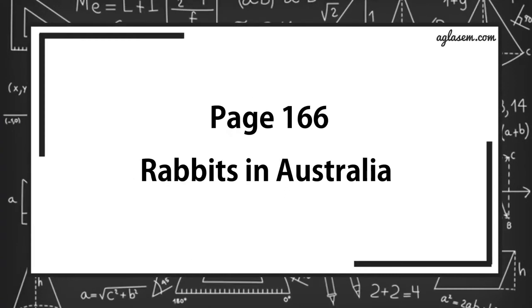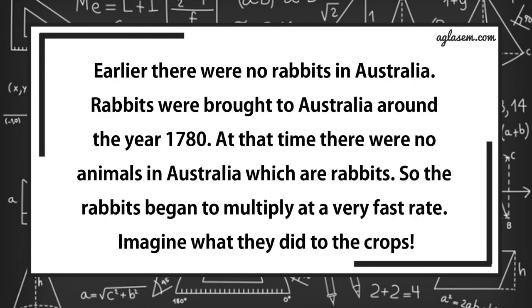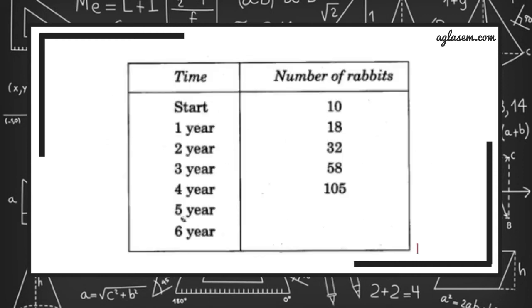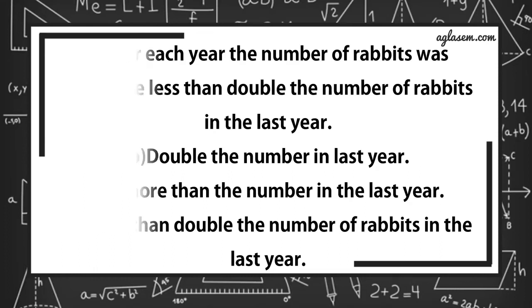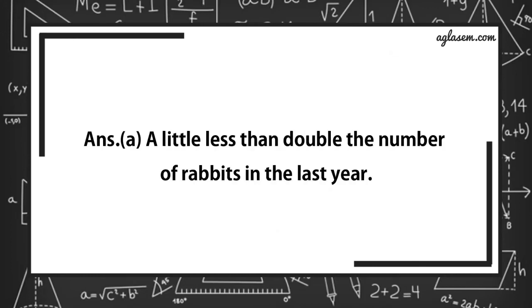Now, turn to page number 166. Rabbits in Australia. Earlier, there were no rabbits in Australia. Rabbits were brought to Australia around the year 1780. At that time, there were no animals in Australia which ate rabbits. So, the rabbits began to multiply at a very fast rate. Imagine what they did to the crops. This table shows how rapid growth every year. In starting, there were 10 rabbits. After one year, 18 rabbits. Second year, 32 rabbits. Third year, 58 rabbits. And in fourth year, 105 rabbits. After each year, the number of rabbits was: a little less than double the number of rabbits in the last year, double the number in last year, 8 more than the number in the last year, or more than double the number of rabbits in the last year? Answer is A, that is, a little less than double the number of rabbits in the last year.